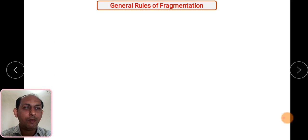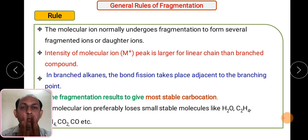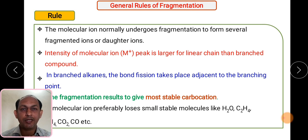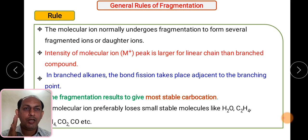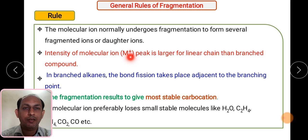Next we understand the concept of fragmentation. As we know, first the molecule gets ionized and converted into a molecular ion peak. Then that particular molecular ion peak gets fragmented into different parts. Molecular ions normally undergo fragmentation to form several fragment daughter ions, so the parent ion peak results into daughter ions.